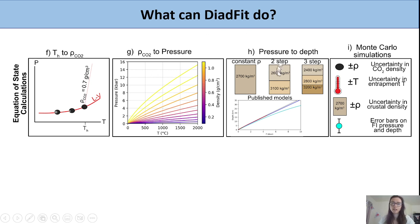Once you have that pressure, you can convert it to depth in the crust using different crustal density profiles. You can use a constant density, a two-step density, a three-step density profile, or a number of published density-depth models from different tectonic settings.